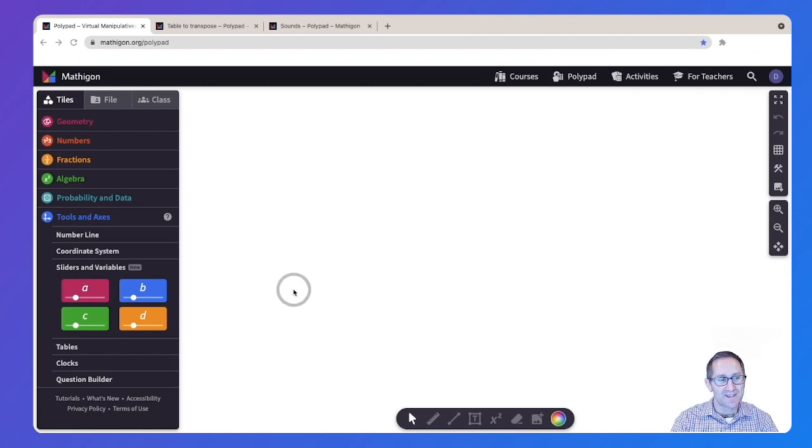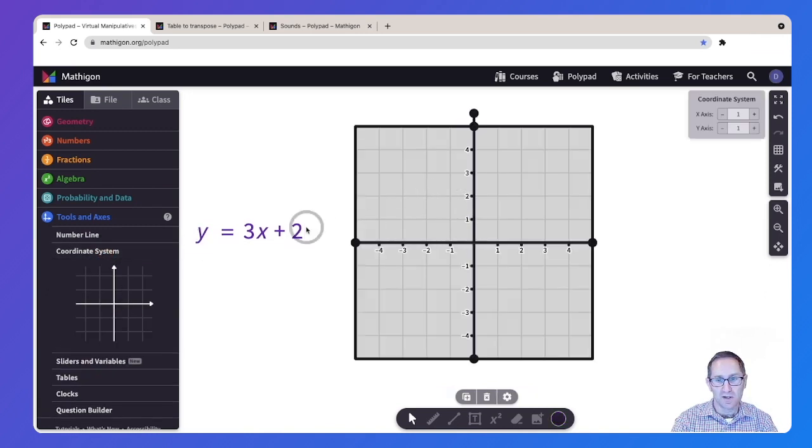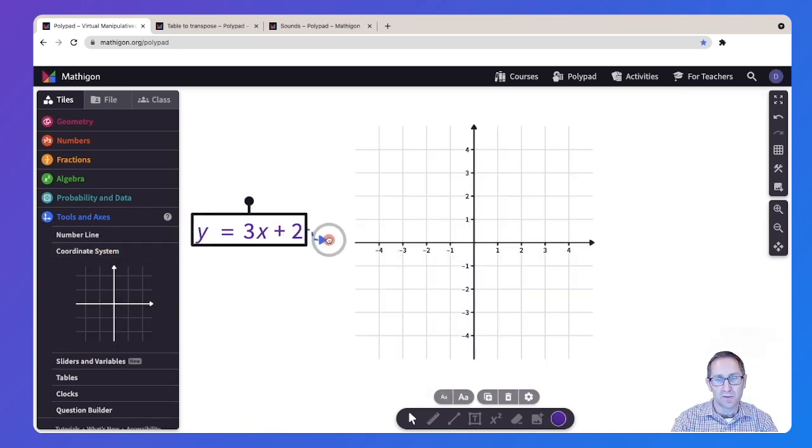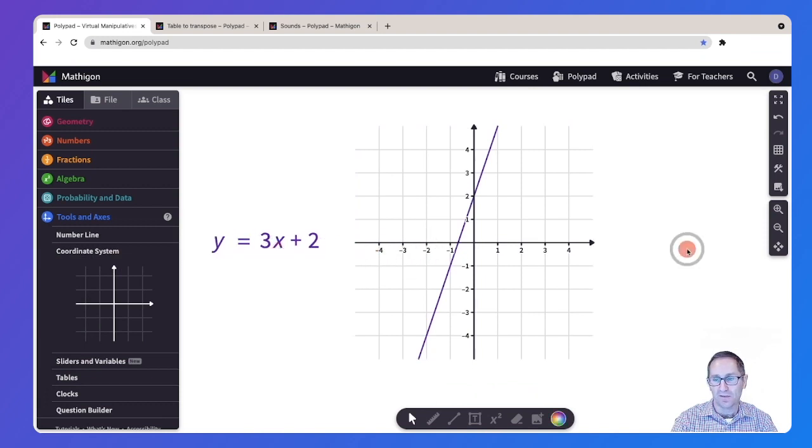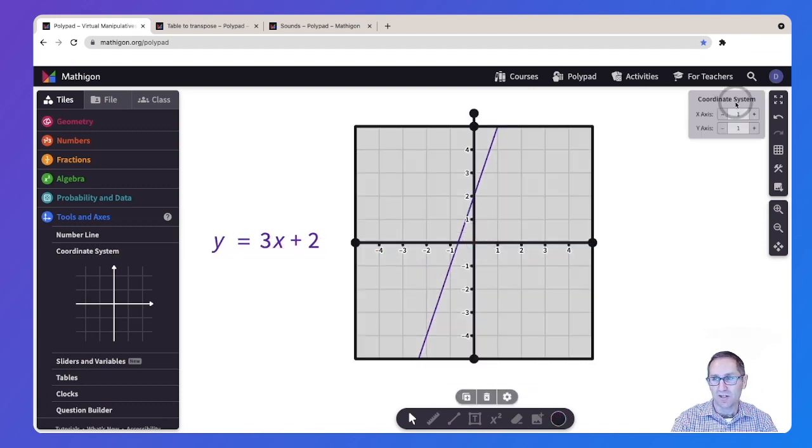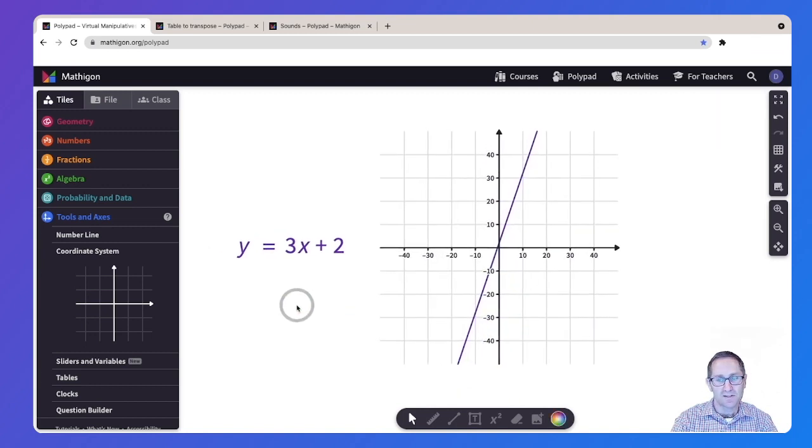The next thing I want to show is our new sliders and variables. I'll start by putting an equation on the canvas. Maybe I'll do y equals 3x plus 2. Make this bigger so we can see it and move it over here. I'll add a coordinate system onto the canvas. And you may know that when you take this blue triangle and drag it onto the coordinate system, it'll graph that equation. I'm going to change my scale of the coordinate system to go by tens. So this is not new.